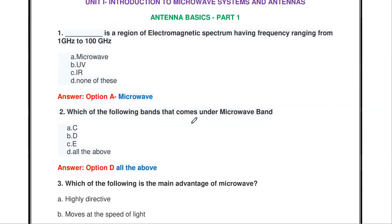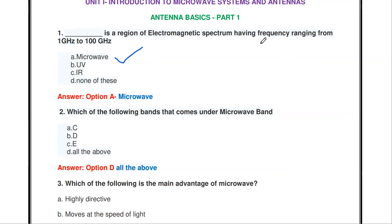The first question: which is a region of the electromagnetic spectrum having the frequency ranging from 1 GHz to 100 GHz? The options are microwave, UV, IR, or none of the above. The answer is microwave. Microwave is a region of the electromagnetic spectrum with a frequency range of 1 GHz to 100 GHz.